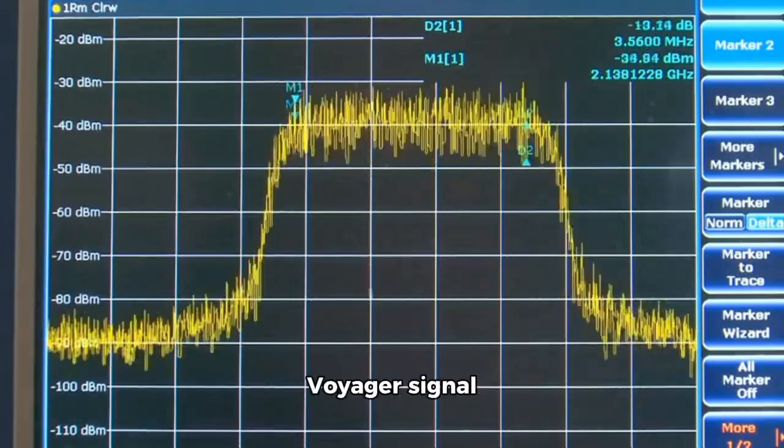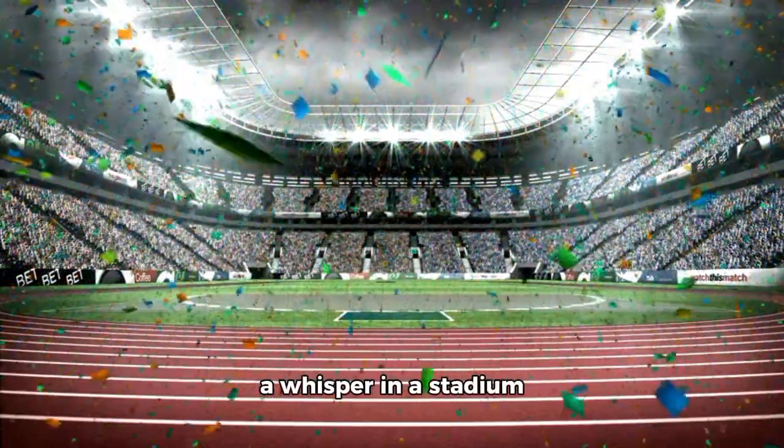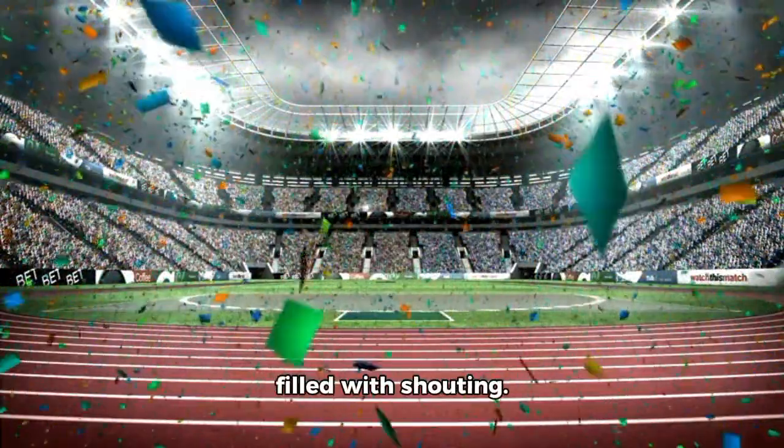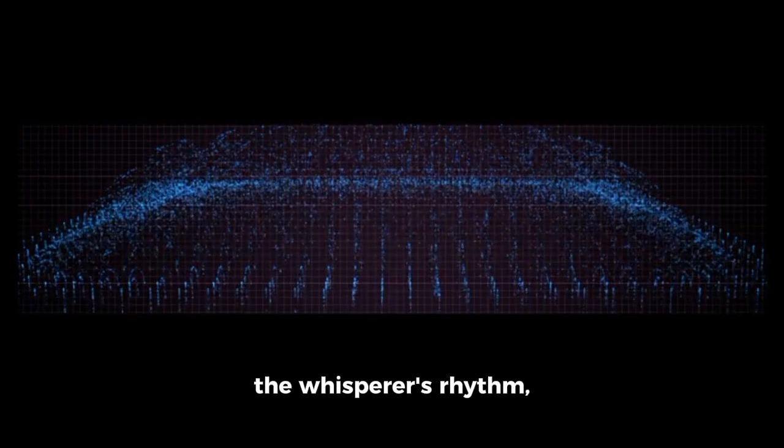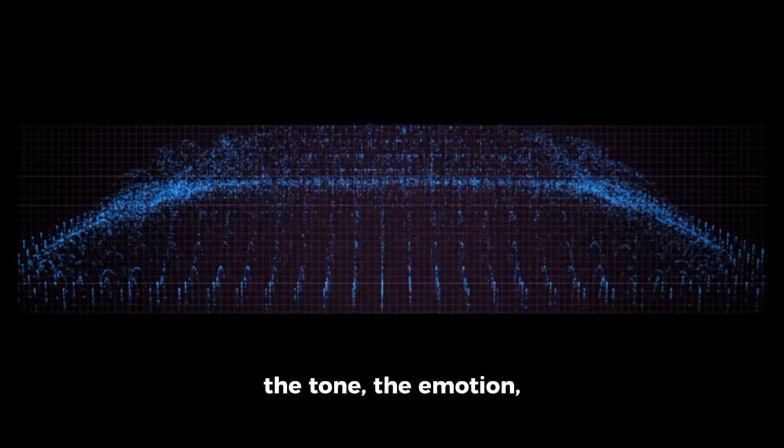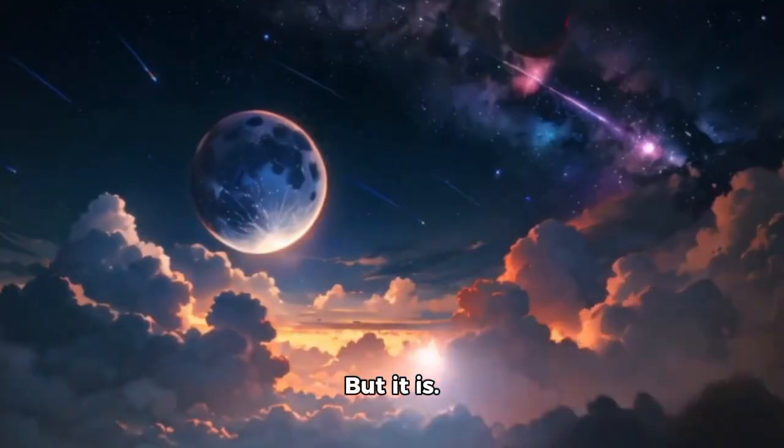Additionally, the Voyager signal contained a lot of it. Imagine attempting to hear a whisper in a stadium filled with shouting. A regular computer might notice volume spikes, but a quantum AI finds the whisperer's rhythm, the tone, the emotion, and says, 'This shouldn't be here. But it is.'